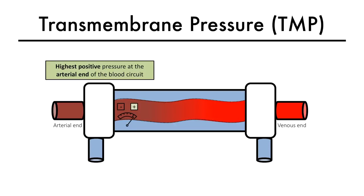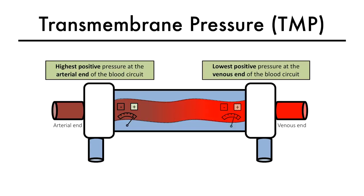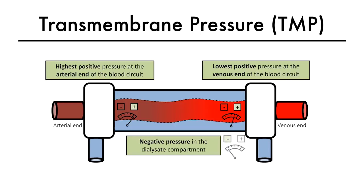Here is a cartoon of the hemodialysis filter. The highest positive pressure is seen at the arterial end of the blood compartment. The lowest positive pressure is seen at the venous end of the blood compartment. A negative pressure is seen in the dialysate compartment. This pressure gradient allows for movement of water across the membrane from the blood to the dialysate.